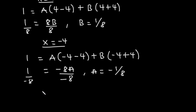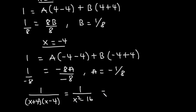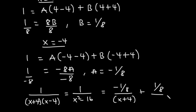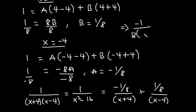So finally, 1 over (x + 4)(x - 4), which is 1 over (x² - 16), can be written as -1/[8(x + 4)] + 1/[8(x - 4)], or equivalently -1/8 times 1/(x + 4) plus 1/8 times 1/(x - 4).